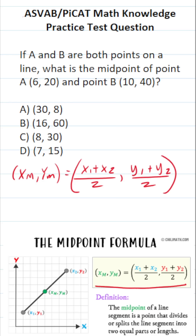The only thing you have to do to solve this one is identify X1, X2, Y1, and Y2 respectively. So this is going to be X1, this is going to be X2, this is going to be Y1, and this is going to be Y2 respectively.